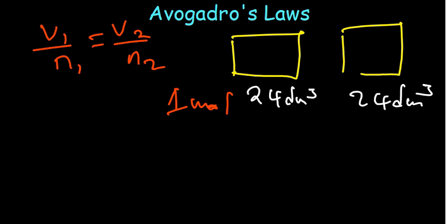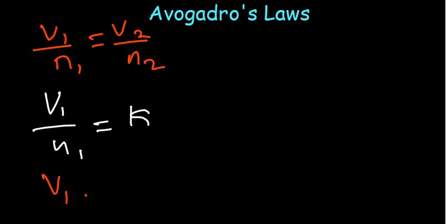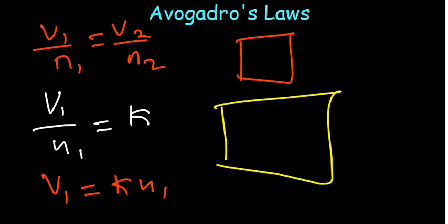According to Avogadro's law: V/n = k, meaning volume is directly proportional to the number of moles at constant temperature and pressure. A smaller volume contains fewer moles; a bigger volume contains more moles. This holds provided temperature and pressure are kept constant.